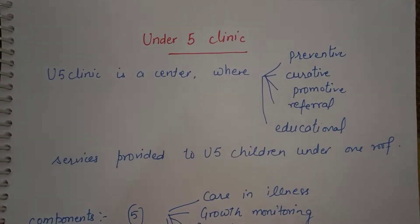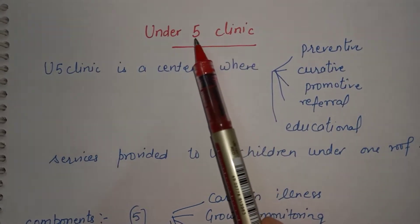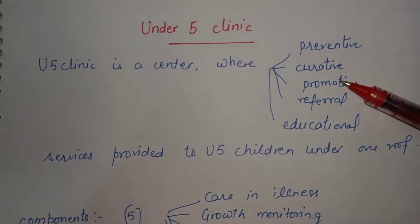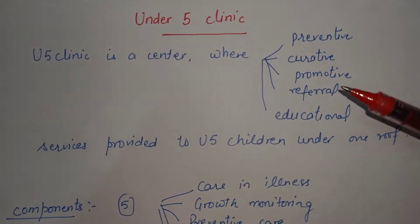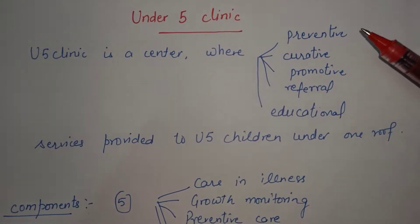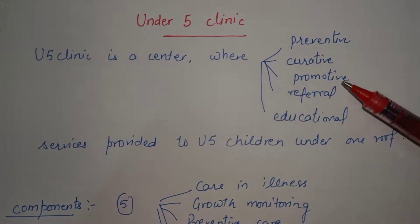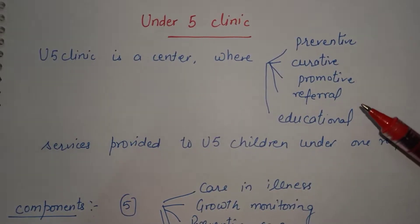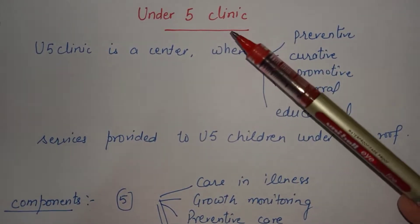Welcome to this video where we will learn about Under Five Clinic. As the name suggests, this clinic is for children below five years of age. It is a center where preventive, curative, promotive, referral, and educational services are given to the child and parents to take care of their children. Under preventive care, we prevent disease conditions like immunization. Under curative care, acute or chronic illness is treated. Promotive care includes health education and breastfeeding. Referral services refer patients to primary, secondary, or tertiary level.